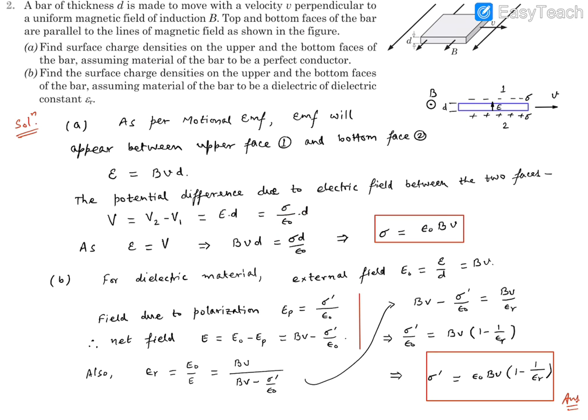Since the EMF and potential difference should be identical, we make them equal: Bvd = σd/ε₀. From here, we find sigma, the surface charge density, which turns out to be σ = ε₀Bv. There will be -σ charge on the upper face and +σ charge on the bottom face, where σ = ε₀Bv. This is for a perfectly conducting material.